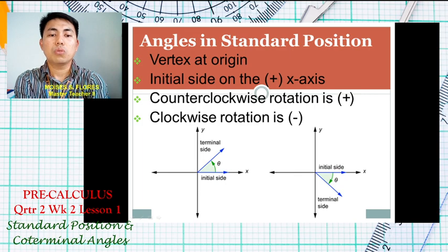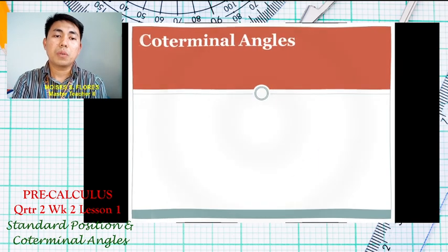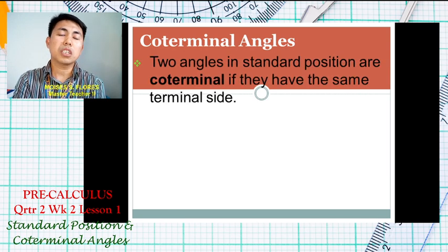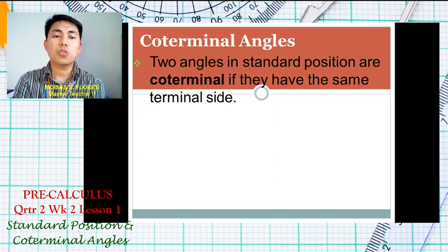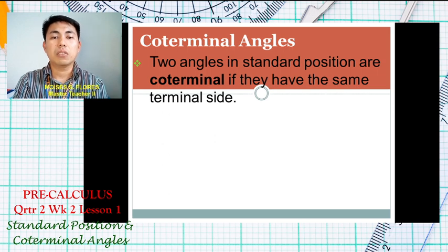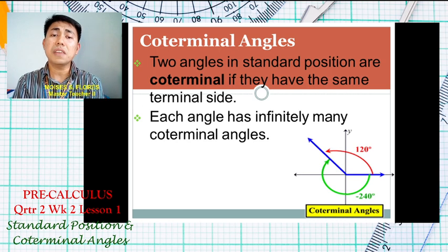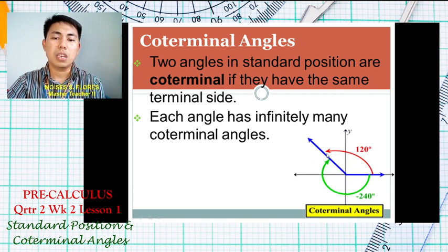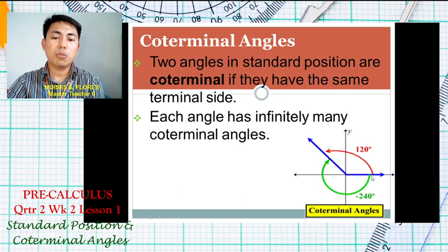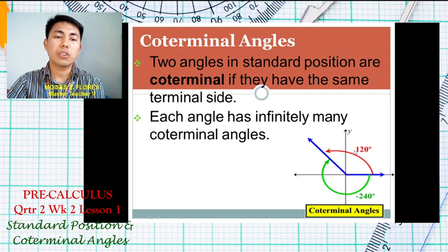Now let's determine coterminal angles. Two angles in standard position are said to be coterminal if and only if they have the same terminal side. Bear in mind that each angle has infinitely many coterminal angles. For example, 120 degrees and negative 240 degrees share the same terminal side, so they are coterminal angles.